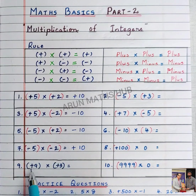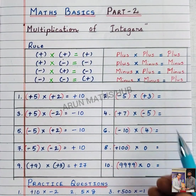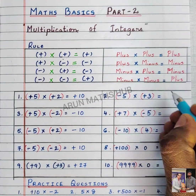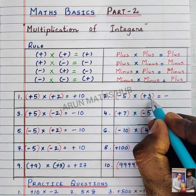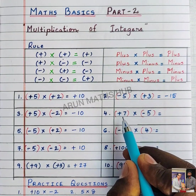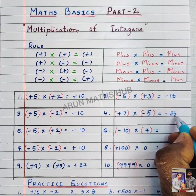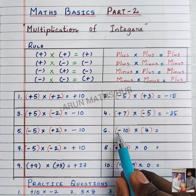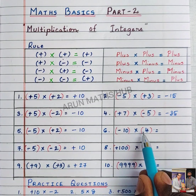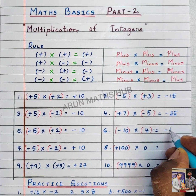In the same way, plus into plus is plus — nine threes are twenty-seven. Minus into plus is minus — five into three is fifteen. Plus into minus is minus — seven fives are thirty-five. Without any sign, it means it is a positive sign. Minus into plus is minus — ten fives are fifty.